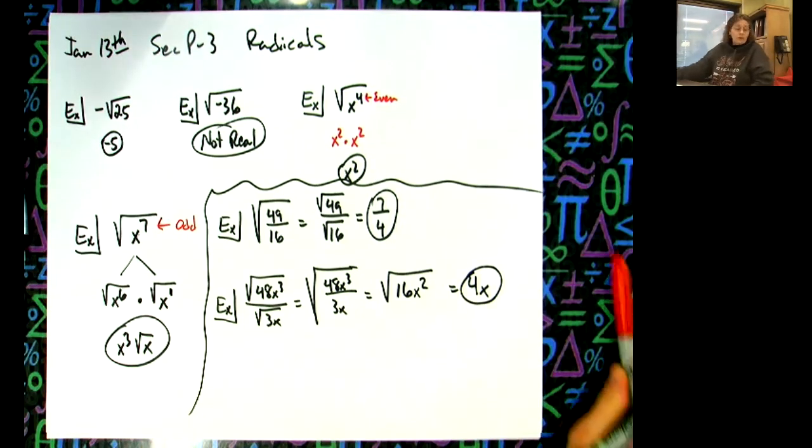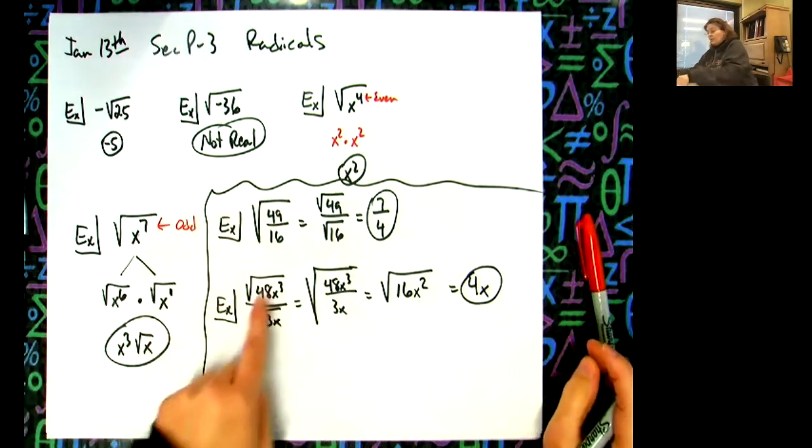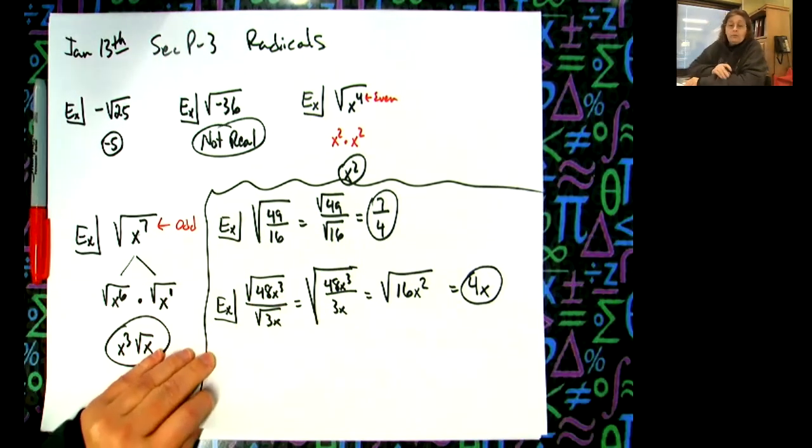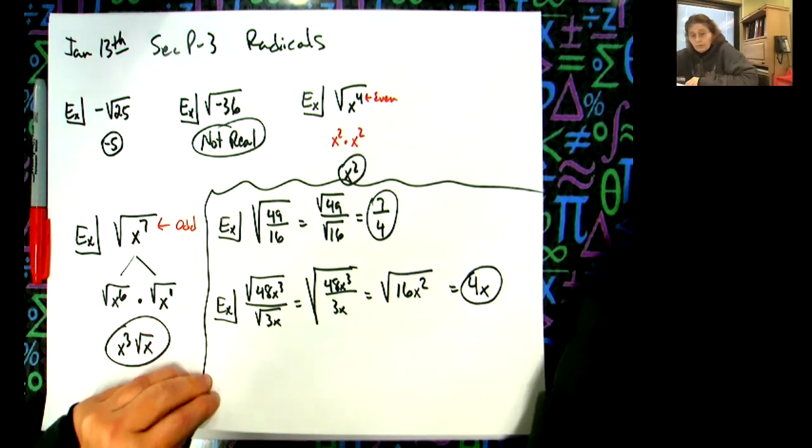So the quotient rule here going back and forth between the two are very common. Questions so far? Are we doing pretty good? This stuff so far has been pretty simple, and I'm assuming since it is reviewing, we had lots of practice with this. You're good so far.